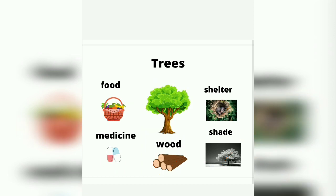Again, one more time. Trees give us food, medicine, wood, shelter, shade. Trees. Trees are our best friend. So, this is the tree. Now, can you tell me what things trees give us?